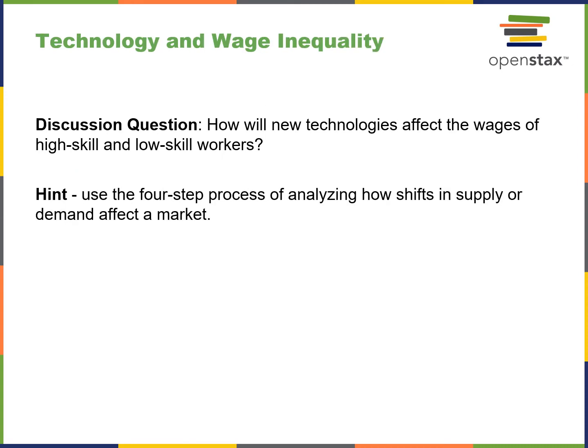A key skill to consider is how new technologies will affect the wages of high-skill and low-skill workers, using the four-step process of analyzing how shifts in supply and demand affect the market. New technologies will increase wages for high-skill workers as long as the new technologies and the workers' skills are aligned — meaning there's some compatibility between the two. For low-skill workers, with automation taking place, there'll be a lower demand for low-skilled workers, and frankly it's going to trend toward minimum wage work.